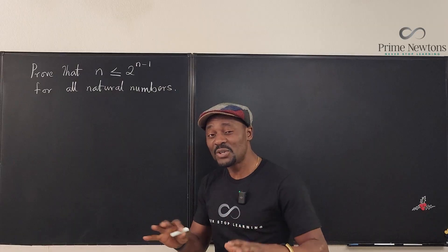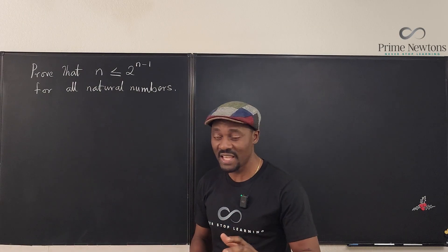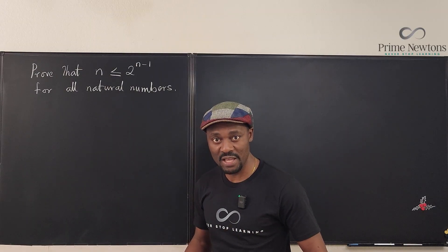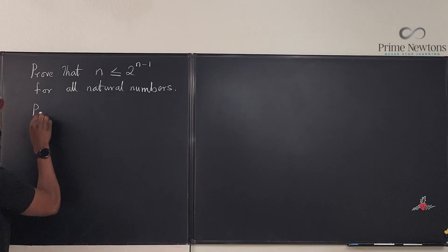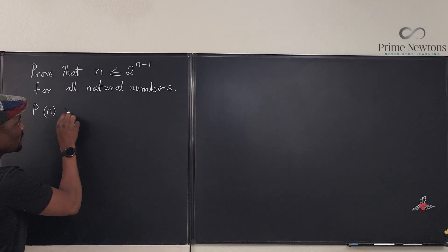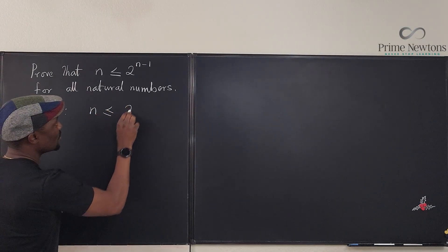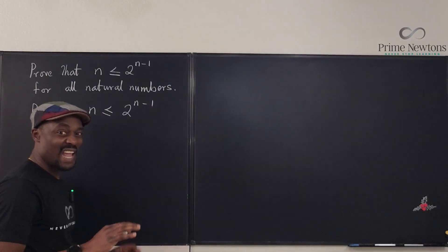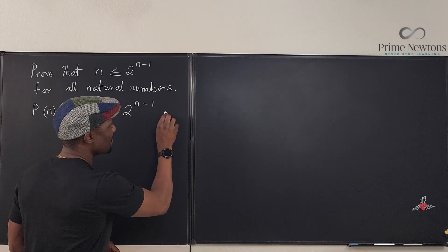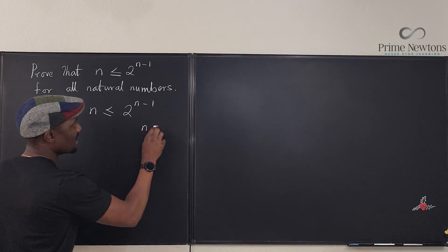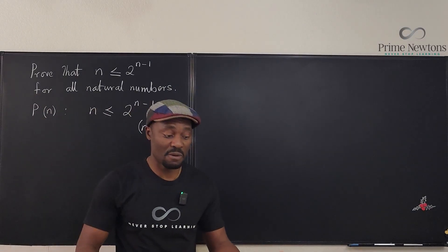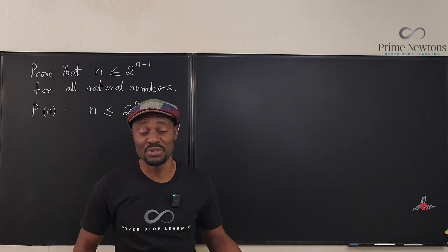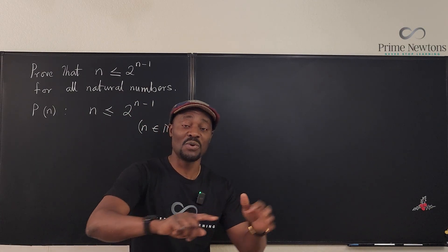There are about three or four steps you need to take when you do mathematical induction. The first thing is to state what you want to show. The general proposition for n is that n is less than or equal to 2 raised to power n minus 1, for any natural number — that is, n is in the set of natural numbers. Natural numbers are the numbers you can count, also called counting numbers. Zero is not included; it's just one, two, three, four, and so on.